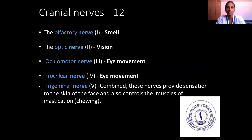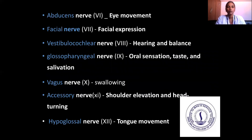There are 12 pairs of cranial nerves. The olfactory nerve deals with smell. The optic nerve is responsible for vision. The oculomotor nerve involves eye movements. The trochlear nerve also deals with eye movements. The trigeminal nerve provides sensation to the skin of the face and controls the muscles of mastication — mastication means chewing. The abducens nerve deals with eye movements. The facial nerve deals with facial expressions. The vestibulocochlear nerve deals with hearing and balance. The glossopharyngeal nerve deals with oral sensation, taste, and salivation.